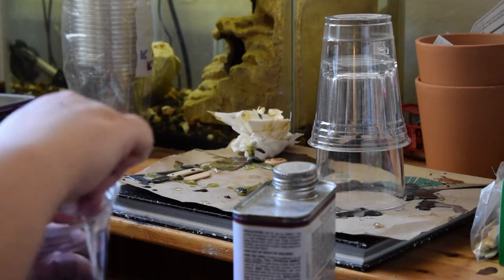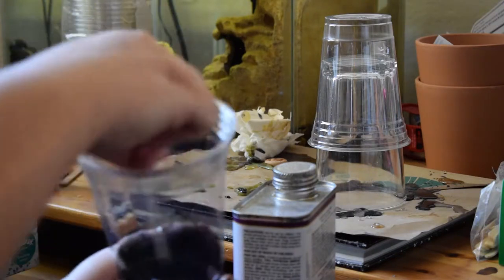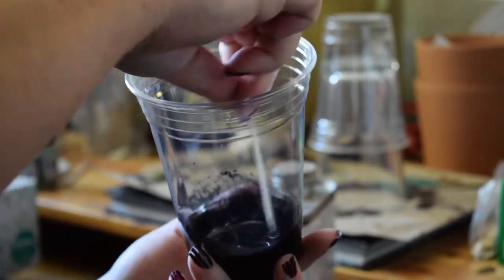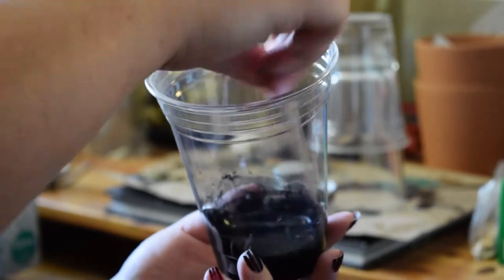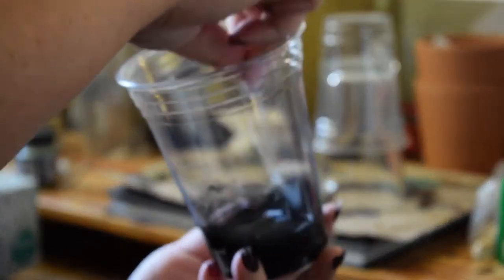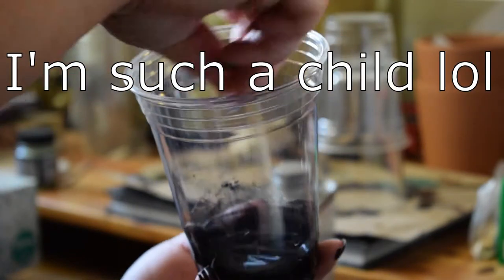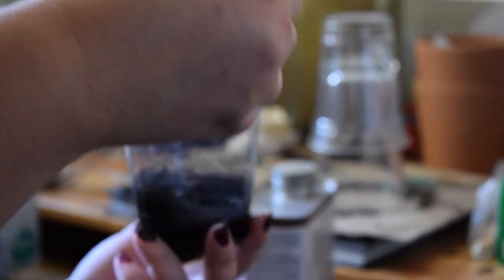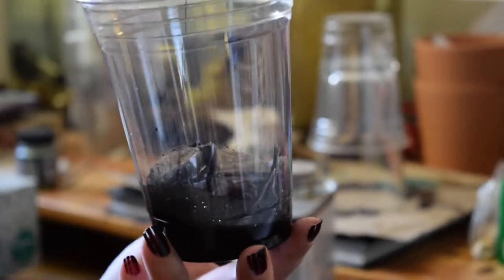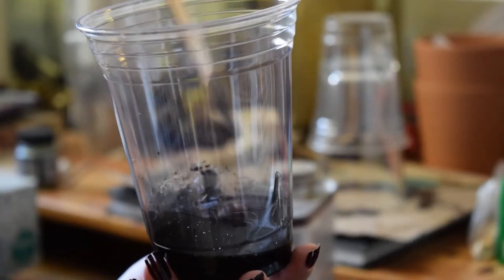If it's not stirred up really well, then it won't set properly and you'll have soft spots. Nobody wants that with resin. You want it nice and hard. Scrape down the sides. Get everything mixed in. It's this nice black color. Hopefully it won't be too opaque, but we'll see.